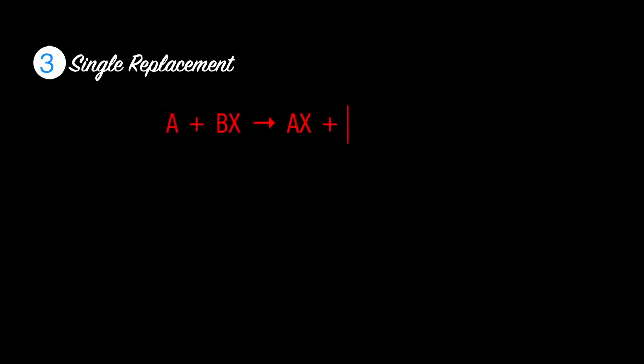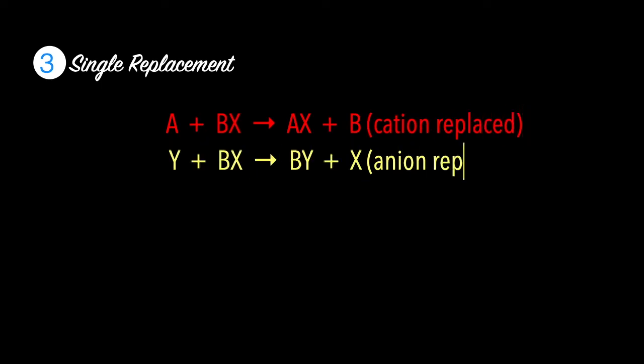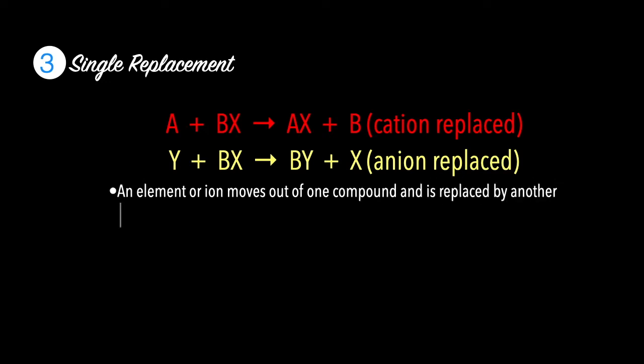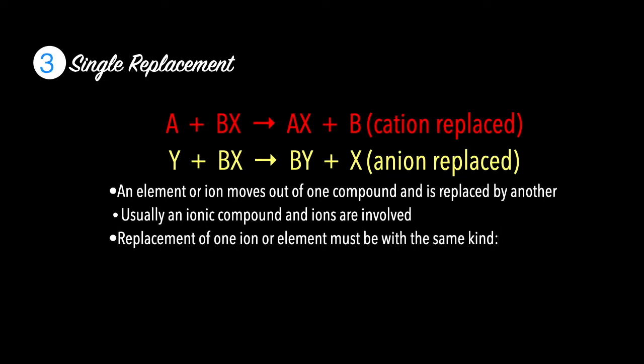Number three, single replacement. A plus BX gives you AX plus B, where the cation is replaced. You can also get Y plus BX gives you BY plus X, where the anion is replaced. An element or ion moves out of one compound and is replaced by another. Usually an ionic compound and ions are involved. Replacement of one ion or element must be with the same kind. For example, metals by another metal, halogens by more active halogens.